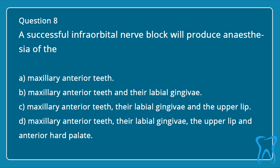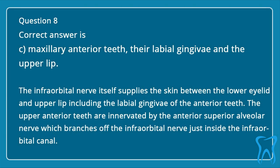Question 8. A successful infraorbital nerve block will produce anesthesia of the: A. Maxillary anterior teeth. B. Maxillary anterior teeth and their labial gingiva. C. Maxillary anterior teeth, their labial gingiva, and the upper lip. D. Maxillary anterior teeth, their labial gingiva, the upper lip, and anterior hard palate. The correct answer is C: maxillary anterior teeth, their labial gingiva, and the upper lip. The infraorbital nerve supplies the skin between the lower eyelid and upper lip including the labial gingiva of the anterior teeth. The upper anterior teeth are innervated by the anterior superior alveolar nerve, which branches off the infraorbital nerve just inside the infraorbital canal.